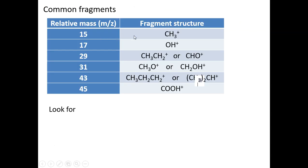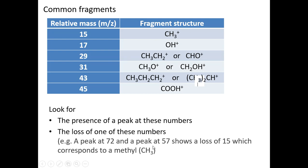You're also given a short list of masses with some possible structures. Don't restrict yourself to these structures only, but this is a good start. So look for the presence of the peak at these numbers and the loss of these numbers. If you see you have a peak at 72 and 57, the difference between them is 15, which means you must have lost a methyl group.